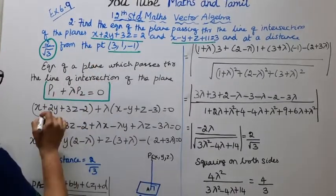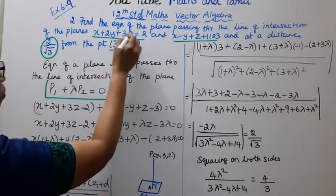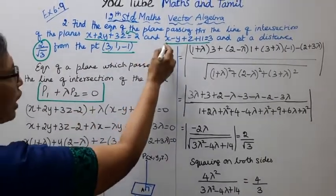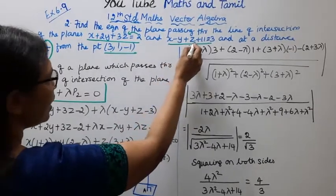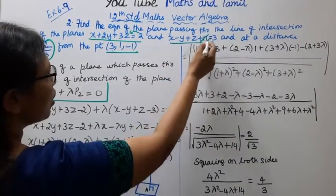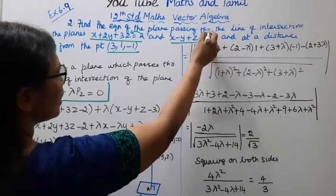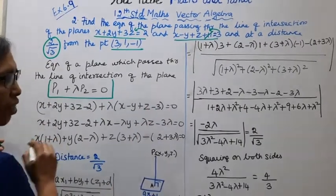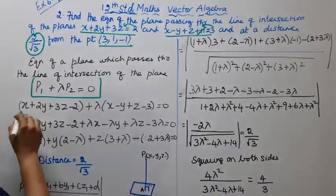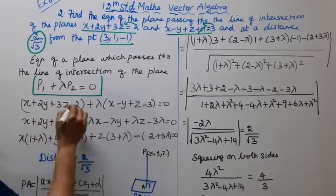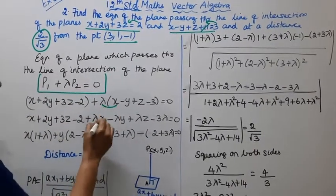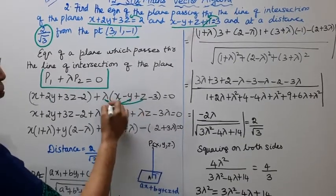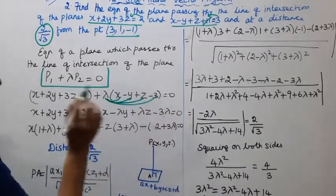This is x plus 2y plus 3z minus 2 plus lambda into x minus y plus z minus 3 equal to 0. Expanding: x plus 2y plus 3z minus 2 plus lambda x minus lambda y plus lambda z minus 3 lambda equal to 0.